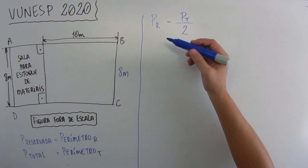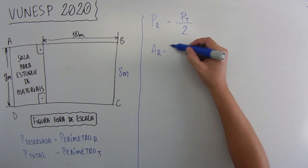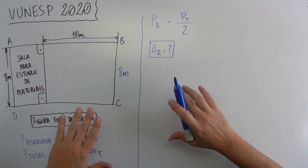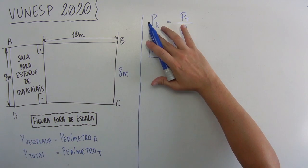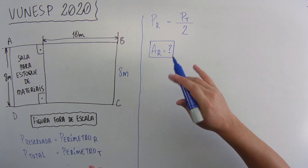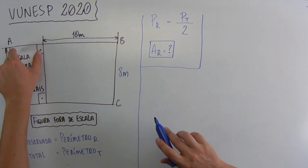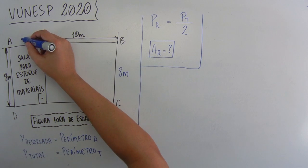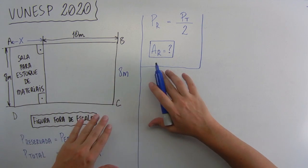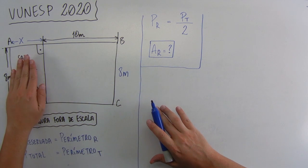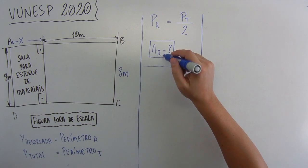Então, a área da sala reservada, ele quer a área da sala reservada. Então, pra gente resolver isso, a gente tem que descobrir quanto vale cada lado aqui, pra gente conseguir descobrir o perímetro, o perímetro total, e fazer algumas continhas pra gente descobrir quanto vale esse lado aqui, esse ladinho aqui que eu vou chamar de X, pra gente fazer a área da área reservada aqui. Beleza? Então, se a gente descobrir esse X, vai rolar da gente descobrir a área reservada.